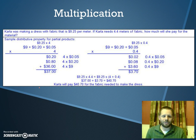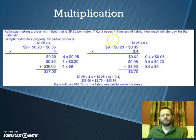The problem reads: Carla is making a dress with fabric that is $9.25 per meter. Carla needs 4.4 meters of fabric. How much will she pay for her materials? The problem here is $9.25 times 4.4 meters. Let's make this simpler. Instead of doing $9.25 times 4.4, let's break apart the 4.4 into 4 meters and 0.4 meters. So we'll do $9.25 times 4 meters and $9.25 times 0.4 meters. Then we can add the two results together to find the total cost.